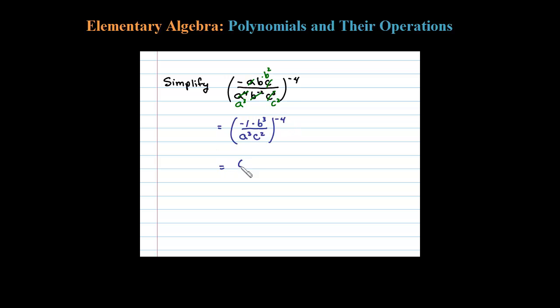That will leave us with negative 1 to the negative 4th power. 3 times negative 4 is negative 12, so b to the negative 12th power, all divided by a to the negative 12th power and c to the negative 8 power.